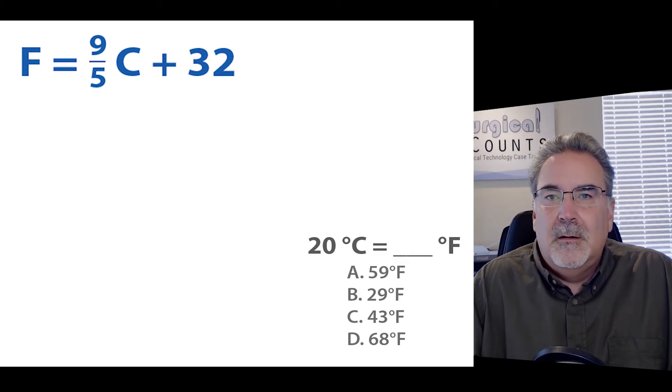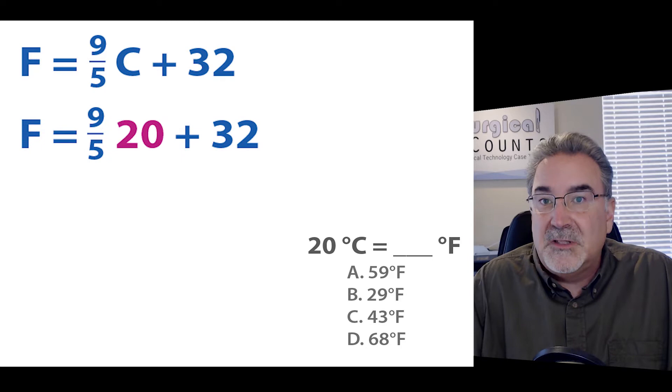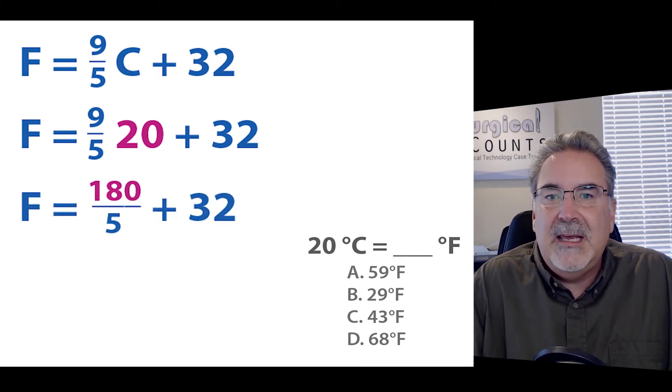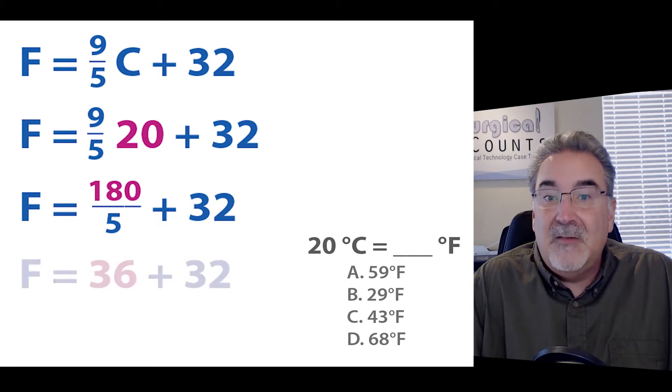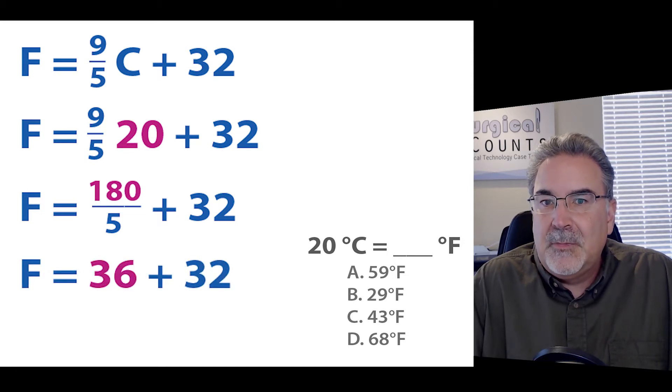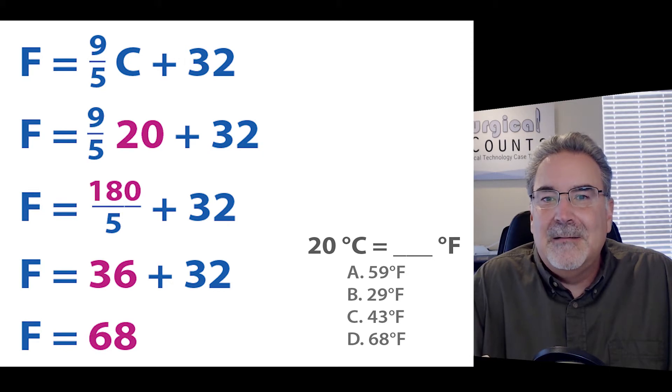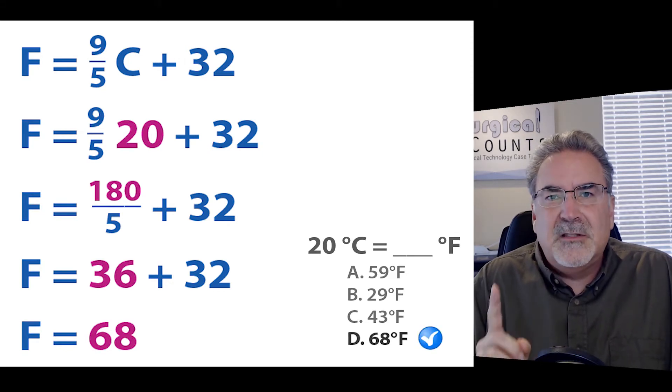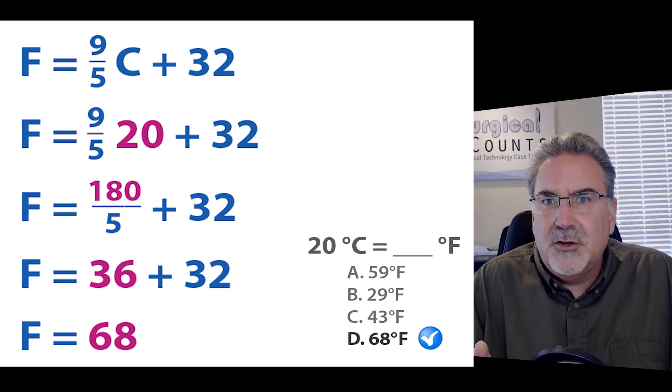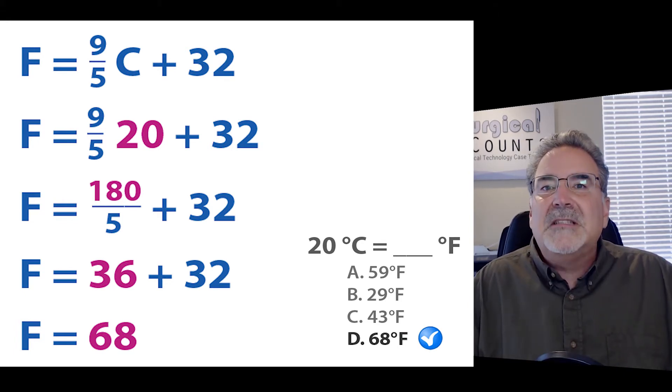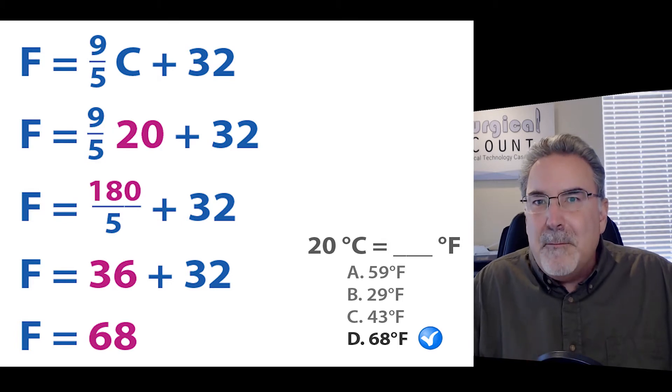So using this equation, we can plug in 20 degrees for C and do the math. F equals 9 fifths times 20 plus 32. 9 times 20 is 180. 180 divided by 5 is 36. And 36 plus 32 is 68. And that gives us the correct answer, as long as we memorize that equation and accurately do all the math.